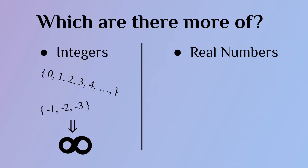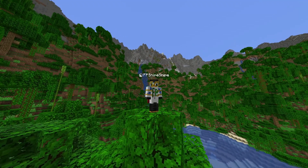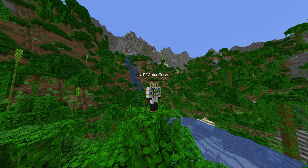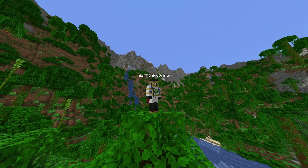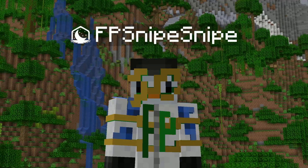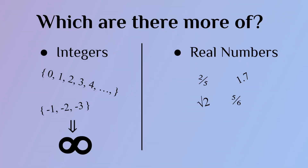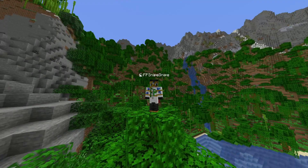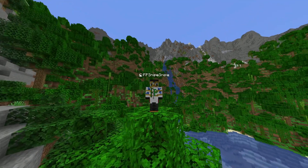A real number is basically every number that can be written on your classic second grade number line. Real numbers are basically integers, but fractions and decimals were invited to the party. Like integers, there is also an infinite number of real numbers. So which are there more of — integers or real numbers?